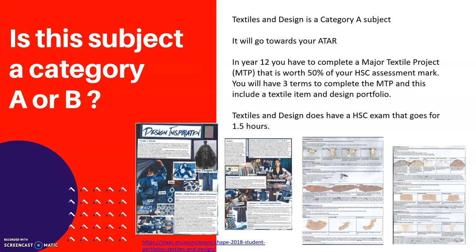In Year 12 you have to complete a major textiles project, and it's worth 50% of your HSE assessment mark. You have three terms to complete it. You have to design and create a textiles item as well as a design portfolio — they are worth just as much as each other. As 50% of your HSE mark is already completed when you hand in the major textiles project, your HSE exam then only goes for 1.5 hours and is only worth 50% of your HSE grade mark.